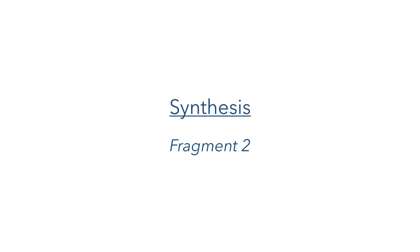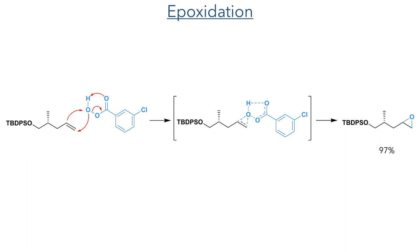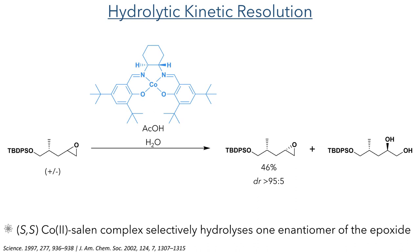So let's move on and look at the synthesis of Fragment 2. This starts with a simple compound containing a silyl-protected alcohol and a terminal alkene. This alkene was reacted with MCPBA, which undergoes a concerted addition to form an epoxide in a 97% yield. This epoxide was produced as a mixture of isomers, and the researchers used a hydrolytic kinetic resolution to obtain the enantiopure material. This was done by reacting the mixture with a chiral cobalt-salen complex.